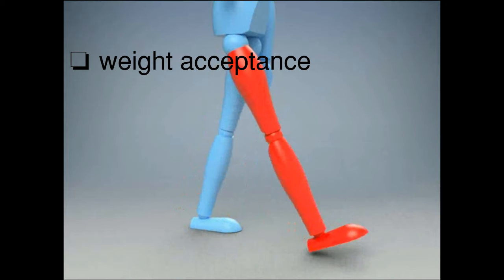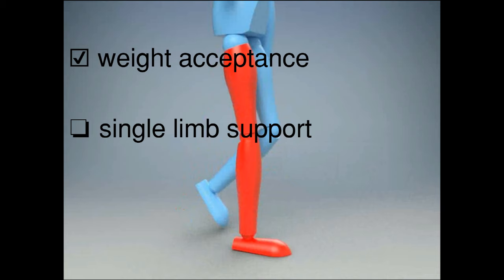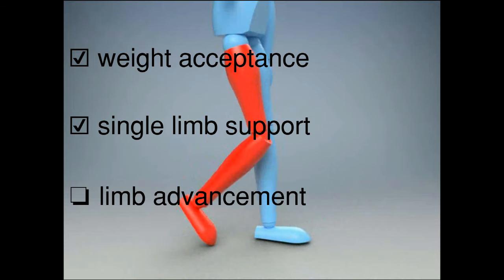First is weight acceptance, meaning the leg can't collapse when you first stand on it. The second is single limb support, meaning the leg must hold you up while your momentum is carried forward. The last is limb advancement; the leg must swing forward and get ready to start the cycle again.